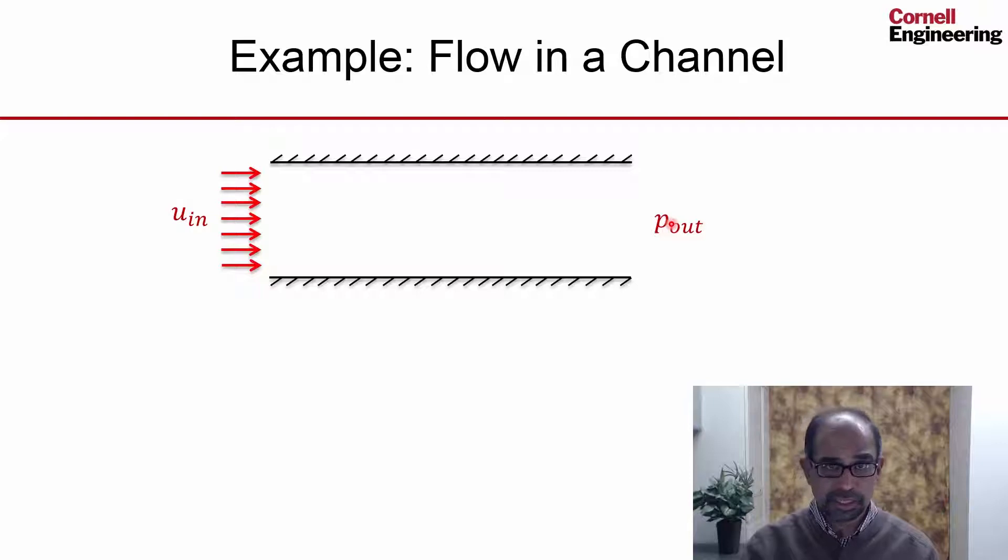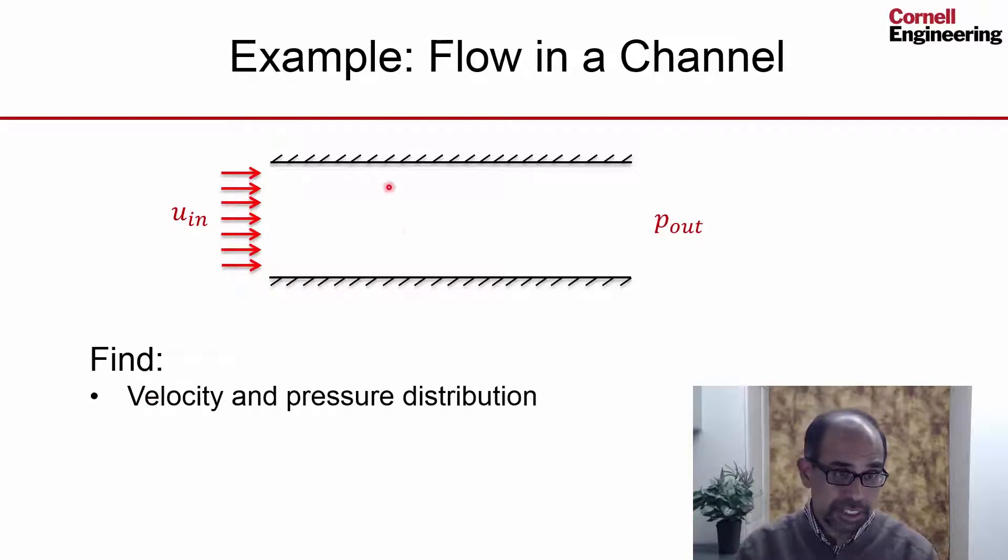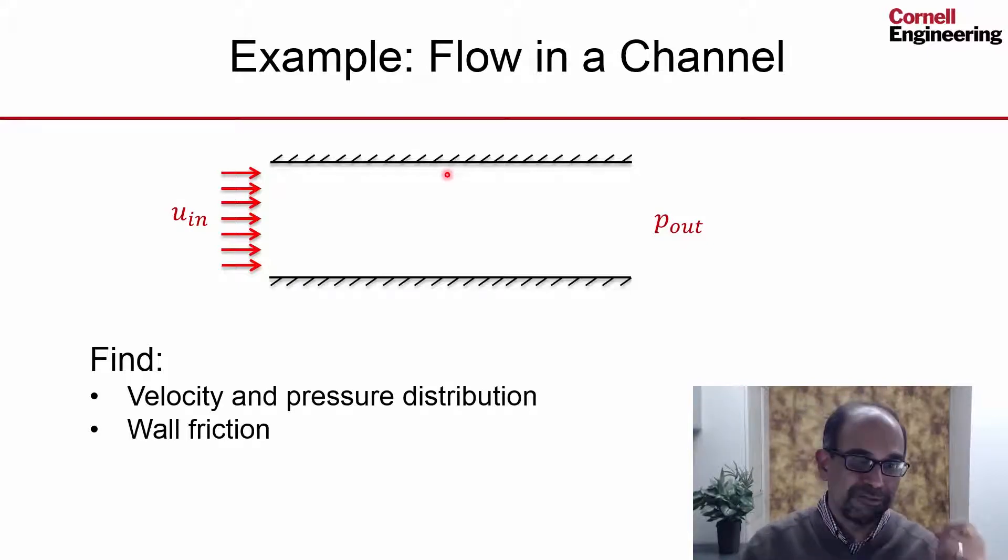We would like to find the velocity and pressure distribution within the channel. We would also like to determine the wall friction, and once we know the wall friction, we can back out what is the power needed to pump the flow through this channel. We'll make simplifications, and the simplifications are: steady, 2D, laminar, incompressible. These will simplify the underlying mathematical model that we need to solve.